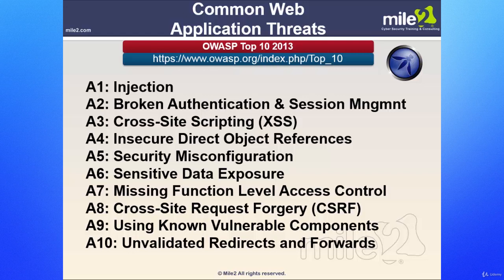Last but not least is unvalidated redirects and forwards. Applications frequently redirect users to other pages, and sometimes a target page is specified in an unvalidated parameter, allowing attackers to choose the destination page. Detecting unchecked redirects is generally easy — look for redirects where you can set the full URL. Unchecked forwards are harder because they target internal pages. Attackers link to unvalidated redirects to trick victims into clicking them, and victims are more likely to click since the link appears to come from a valid site. Attackers also target unsafe forwards to bypass security checks.